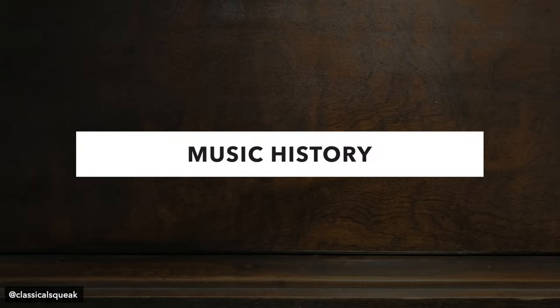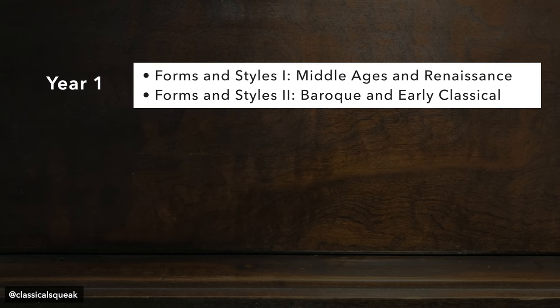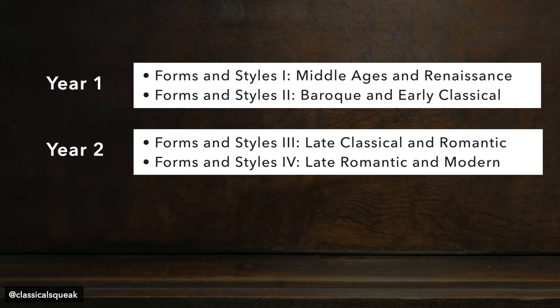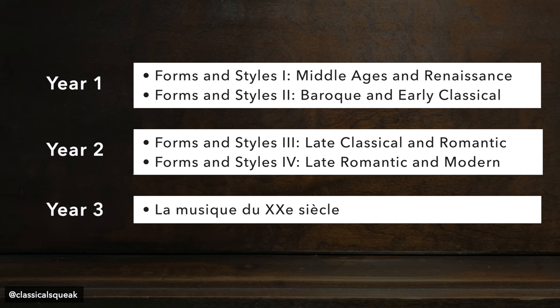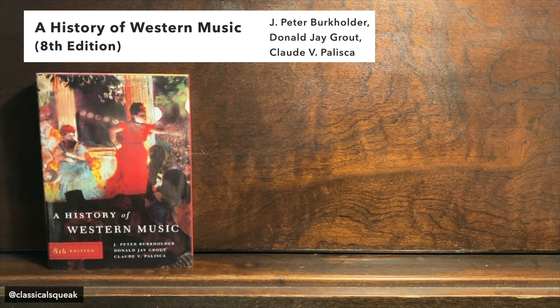Then there were five sections of music history. Normally, you take four sections of history in the first two years, and then the fifth section alternated between being offered in English or French, so you'd time it to take your language of choice. I wanted to finish my compulsories right away, so I took it in French in third year. As the main textbook, we used the Norton: A History of Western Music, 8th edition.